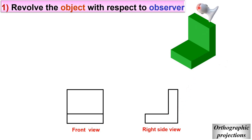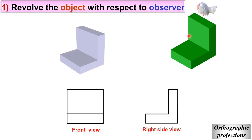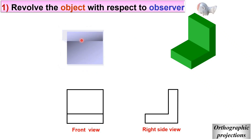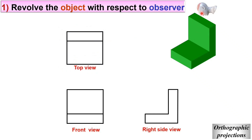To see the top view, you revolve the object again so that the top faces the observer. Here you can see these two rectangles, and this is the top. This is the method where we revolve the object, and according to that you get the different views.